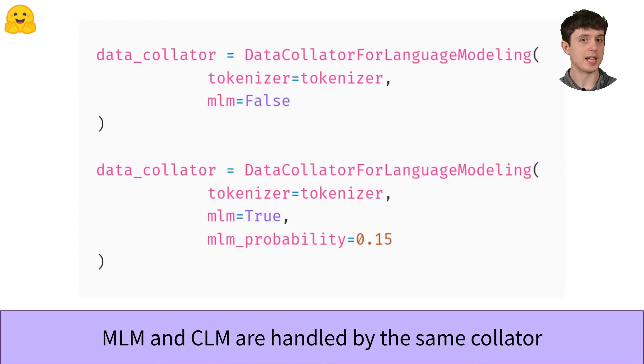So collating data for causal language modeling is actually quite straightforward. The model is just making predictions for what token comes next and so your labels are more or less just a copy of your inputs and the collator will handle that and ensure that the inputs and labels are padded correctly.